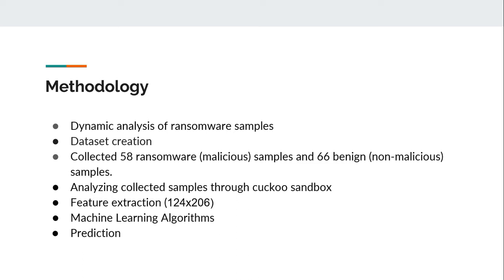These selected samples were stored to classify files as ransomware or legitimate software. They also collected 68 non-malicious samples from trusted sources such as CNET, Chocolatey, and Portable Apps. The collected samples were analyzed through the Cuckoo sandbox, producing results in JSON format to check which API functions are called. Common and unique features of both ransomware and non-malicious samples were extracted and converted to CSV format, then passed to machine learning algorithms to predict whether a file is ransomware or not.